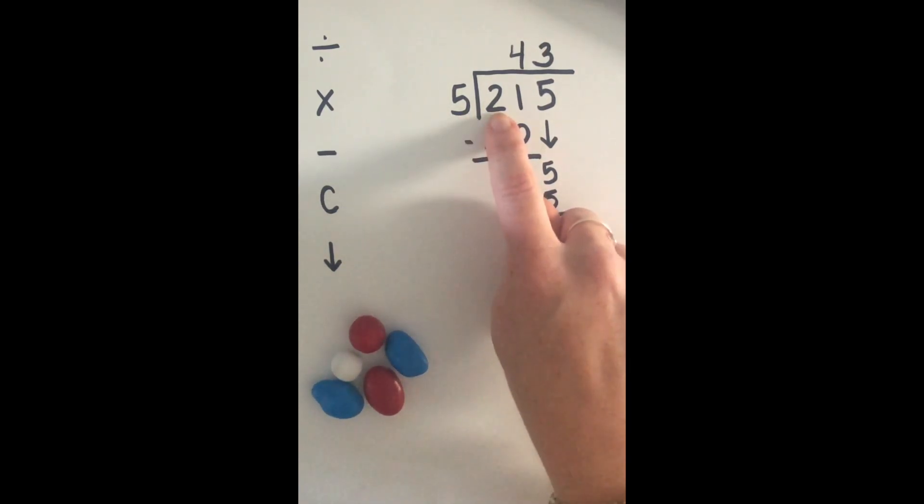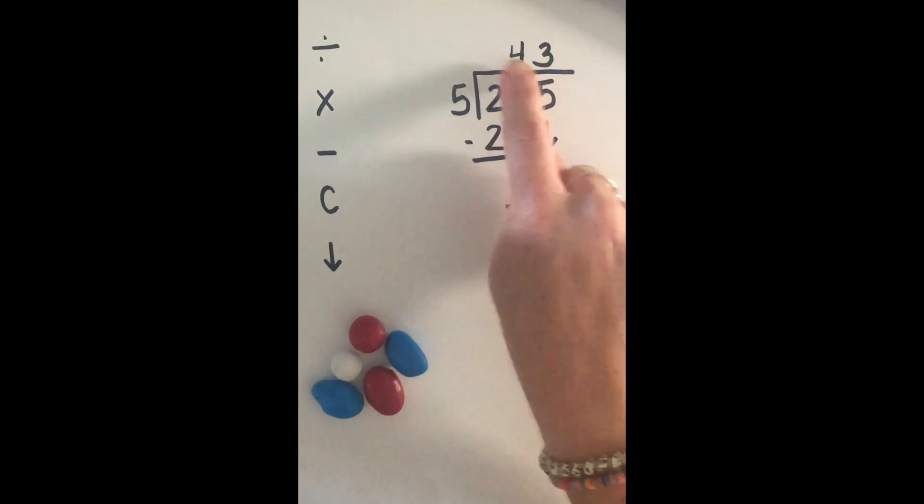Can five go into two? No, so there's nothing written above. Can five go into 21? Yes, four times. That was step one.